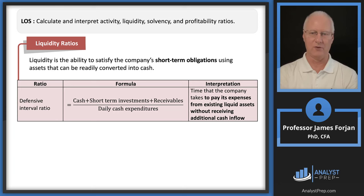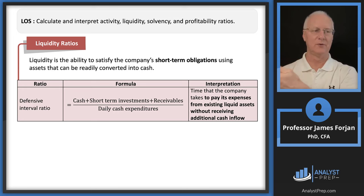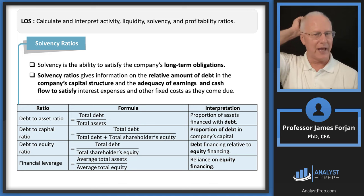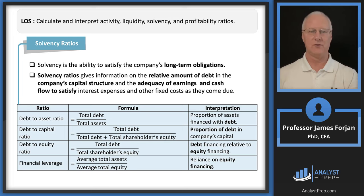The defensive interval ratio is interesting — it asks how easy it is to meet short-term obligations without needing to look at the cash flow statement for additional cash. That's why it's called 'defensive' — you don't need any cash infusion from operating cash flow. Now for long-term obligations, we move to solvency ratios, also called debt ratios or leverage ratios.